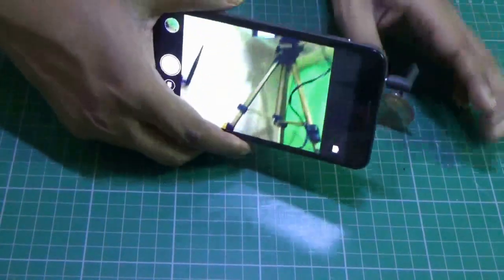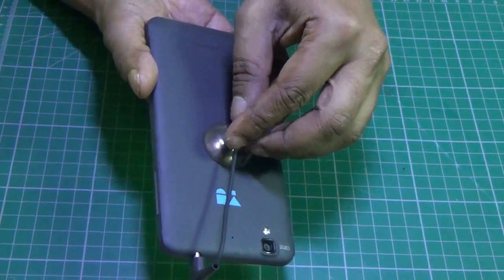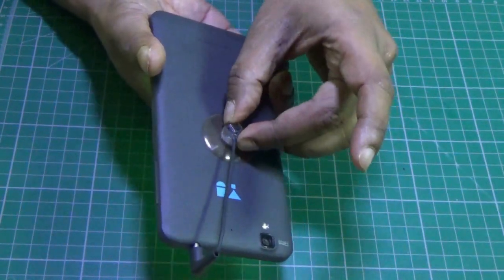Now stick the switch at the back of the mobile phone. Now see, you can easily press it with your index finger.